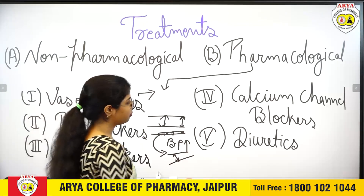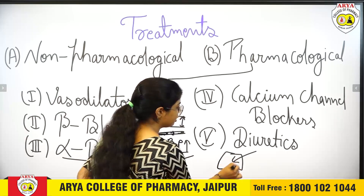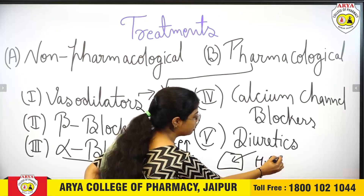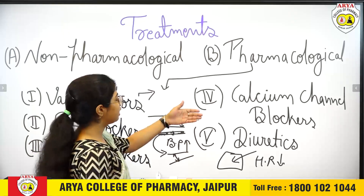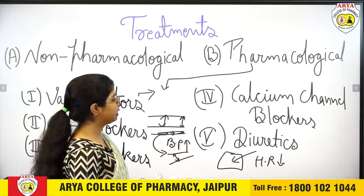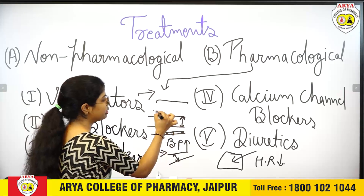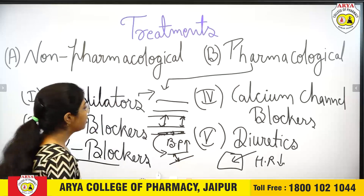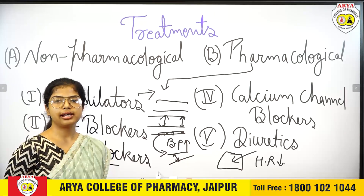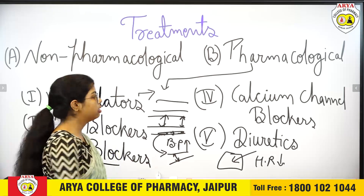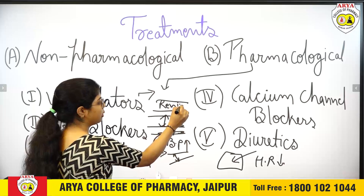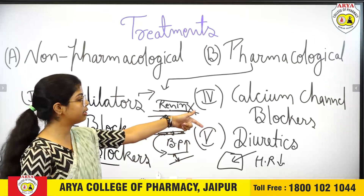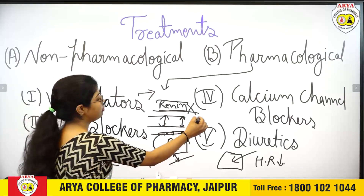Calcium channel blockers block calcium channels. By blocking calcium channels, the heart rate that has increased will decrease and return to normal, thus decreasing blood pressure. An example of a calcium channel blocker is diltiazem. Diuretics are related to the kidney. Examples include thiazides and furosemide. The renin enzyme in the kidney is responsible for increasing blood pressure. Diuretics stop the renin enzyme, reducing the blood-pressure-increasing system in the kidney and bringing blood pressure to normal.